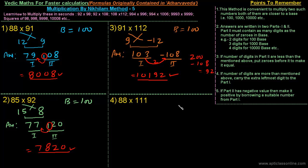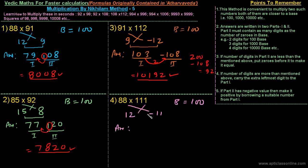Last question: 88 into 111. The base is 100. 88 is 12 less than 100. 111 is how much less than 100? That is minus 11. The difference of 88 and minus 11, or 111 and 12, gives part 1 as 99.